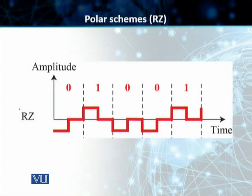Once again, the main problem with NRZ encoding was the sender and the receiving clocks — when they are not synchronized, the receiver does not know where the one bit has ended and where the next bit is starting. So our solution is the return to zero scheme.